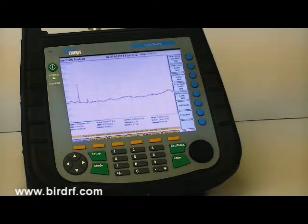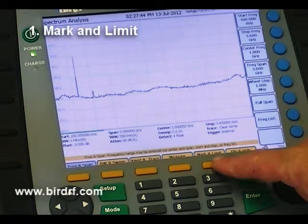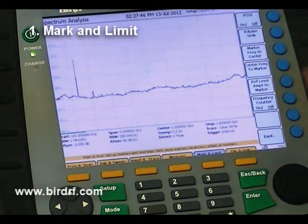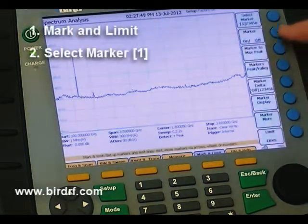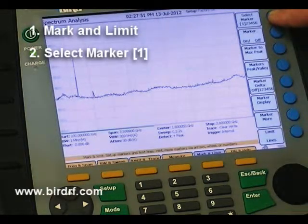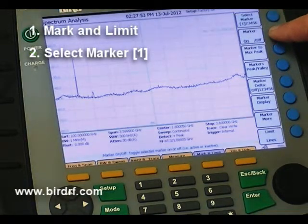To turn on a marker, press the following keys: Mark and Limit. We want to select Marker 1 and turn it on.